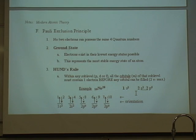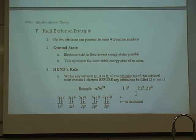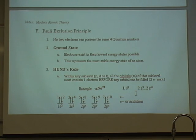We have something called Hund's rule, which states that within any sub-level, all the orbitals — which is quantum number three, or m — of that sub-level must contain one electron before any orbital can be filled. Each orbital can contain up to two electrons.